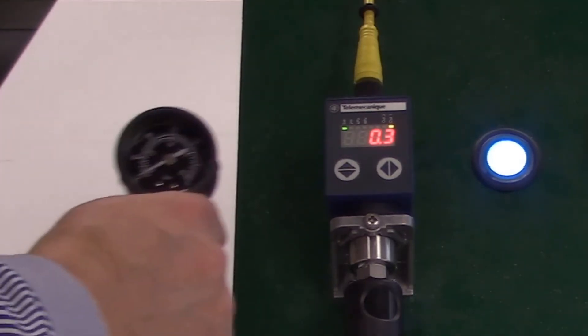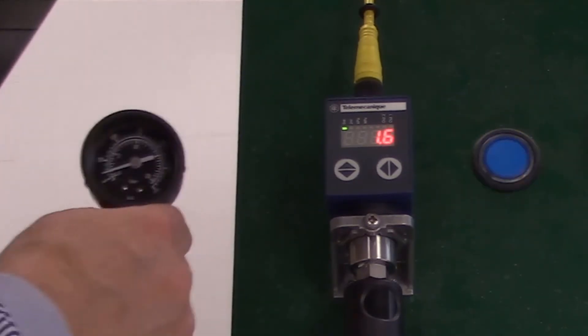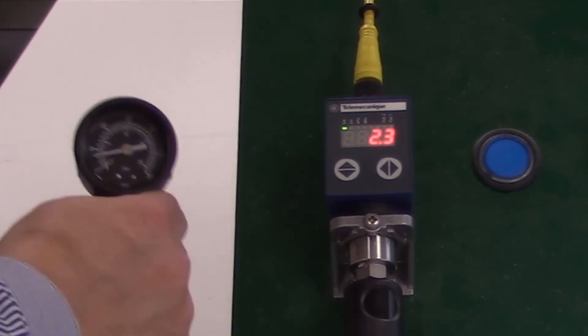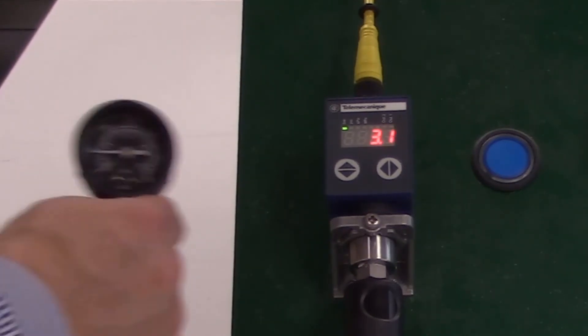If we apply pressure, at 1.5 bar the contact switch is off. If we continue to pressure, at 3.6 bar the contact switch is on again.